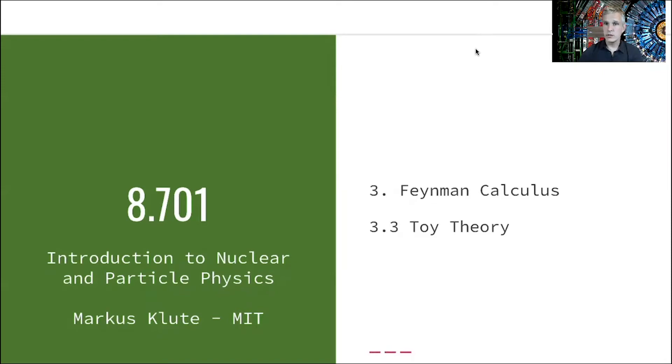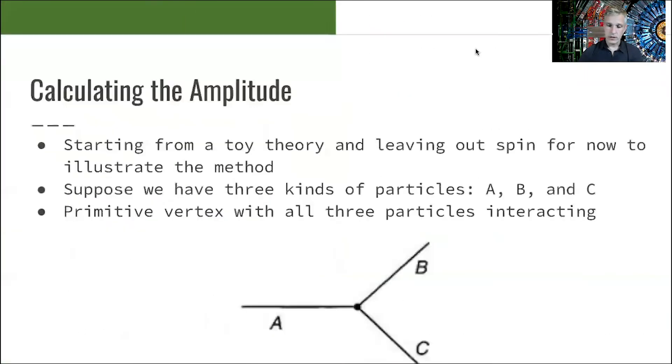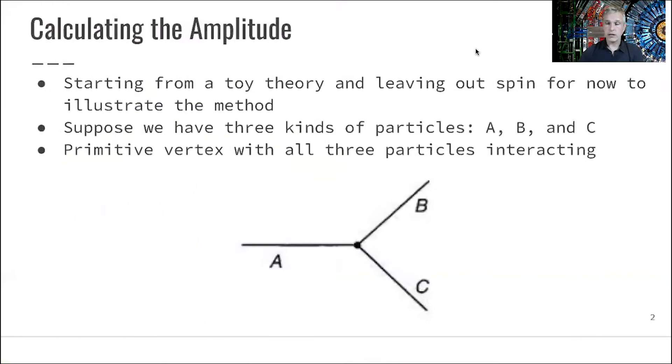And here we dive into a toy theory. So this theory is a toy, and it's just an example to illustrate Feynman rules. The simplification we employ here is leaving out the spin of the particle involved. If we consider the spin, we add another algebraic complication which is quite confusing. So we leave this out for now. We come back later to this.